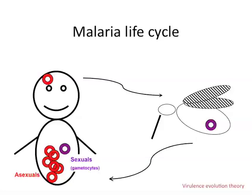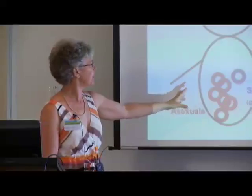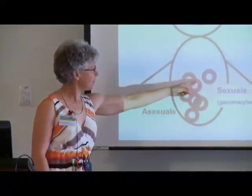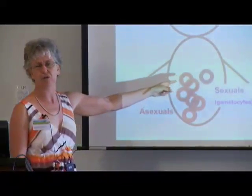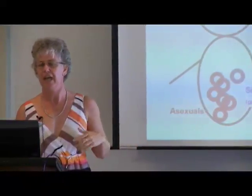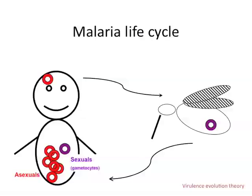The malaria parasite replicates about eightfold every 48 hours in the host, and occasionally spins off sexual forms called gametocytes, which are non-replicating and at low density. Only about 1% of the asexual parasites will convert to gametocytes, which, when a mosquito bites, will be taken up into the mosquito's mid-gut. They'll undergo meiosis, and then the parasite will transmit to the next host that the mosquito bites after about 14 days.